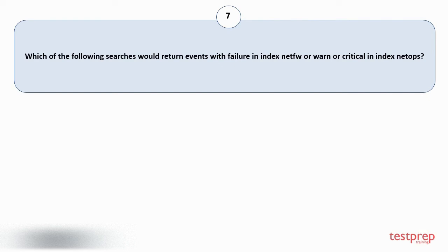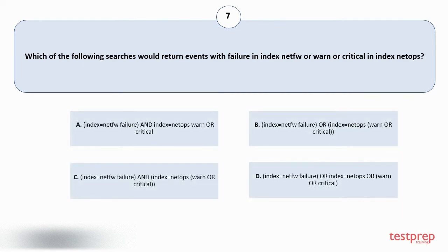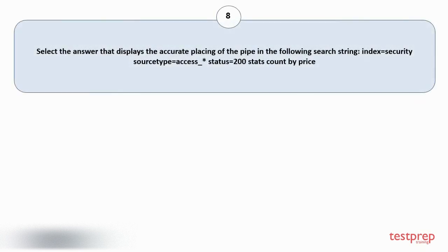Question number seven: which of the following searches would return events with 'failure' in index netf, or 'warn' or 'critical' in index tops? Your options are shown on screen. The correct answer is option B.